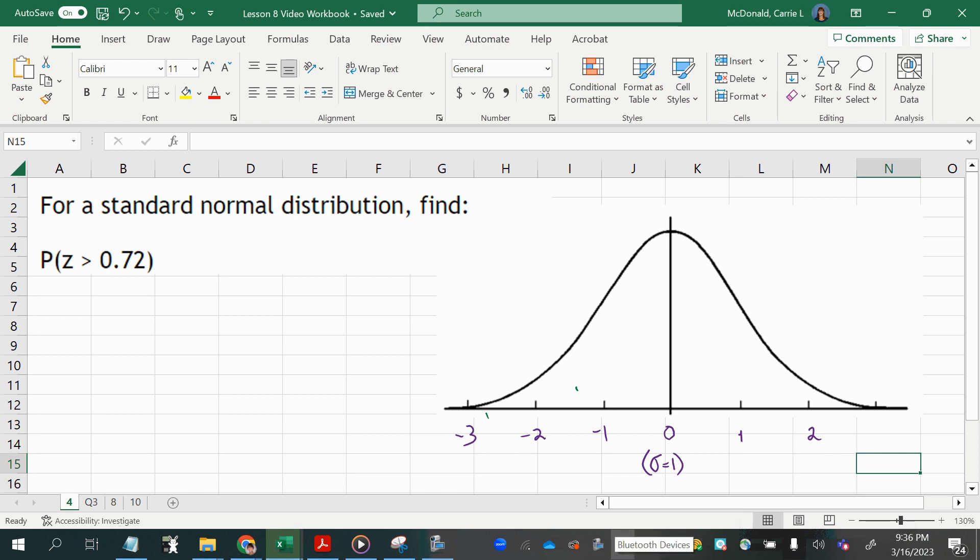For a standard normal distribution, find p of z greater than 0.72. Now the notation here reads p for probability, parentheses for of, so it reads the probability of a z-score randomly selected being greater than 0.72.